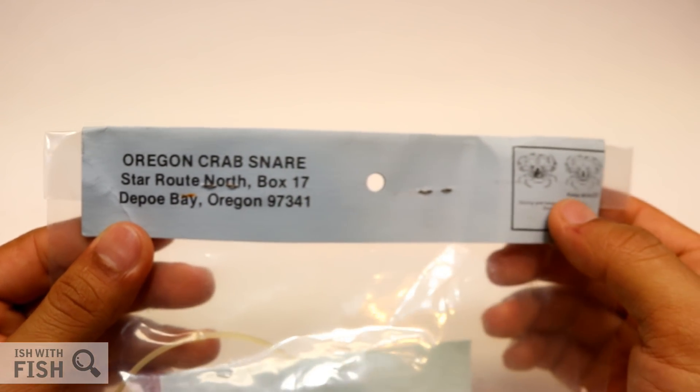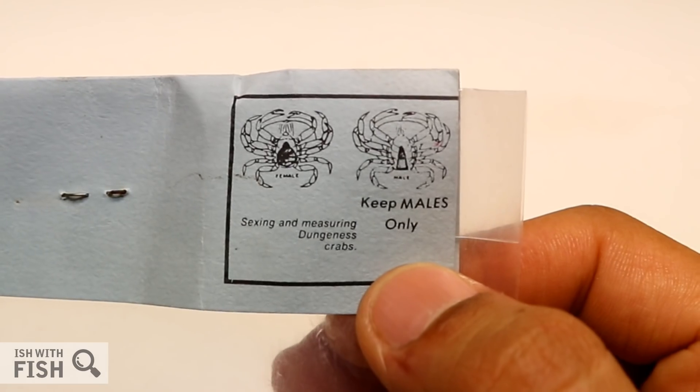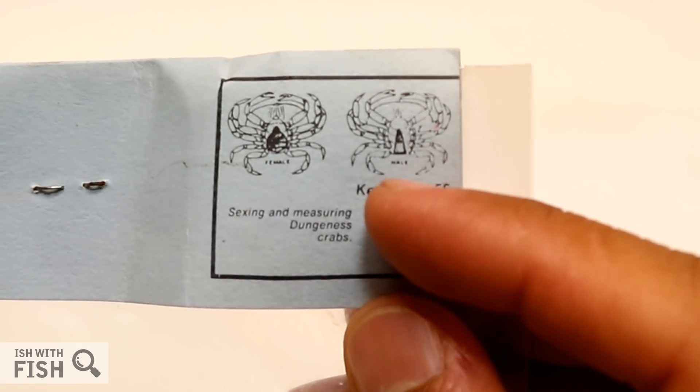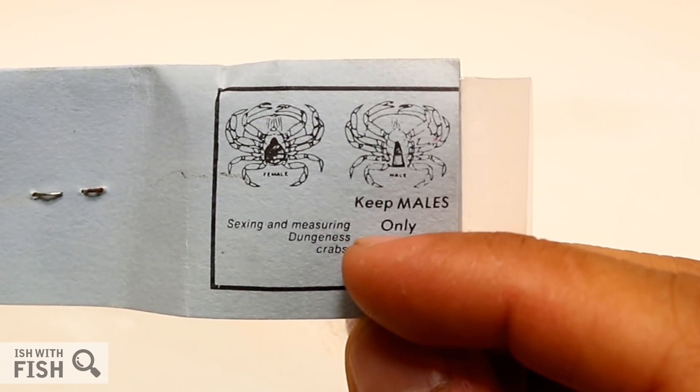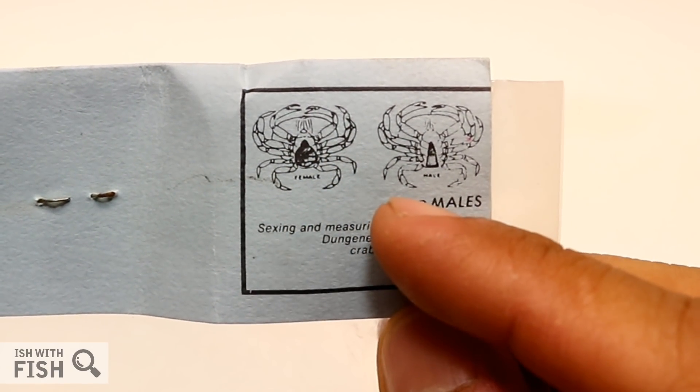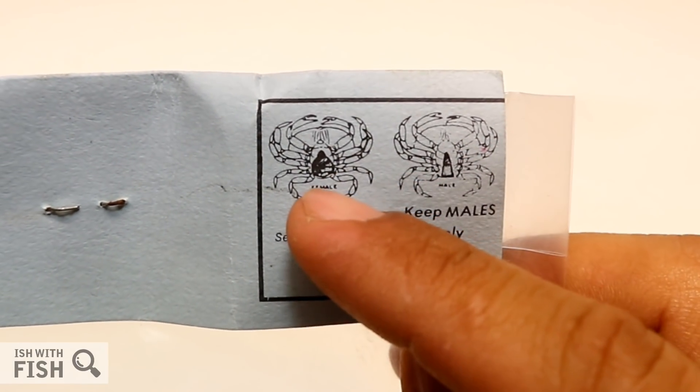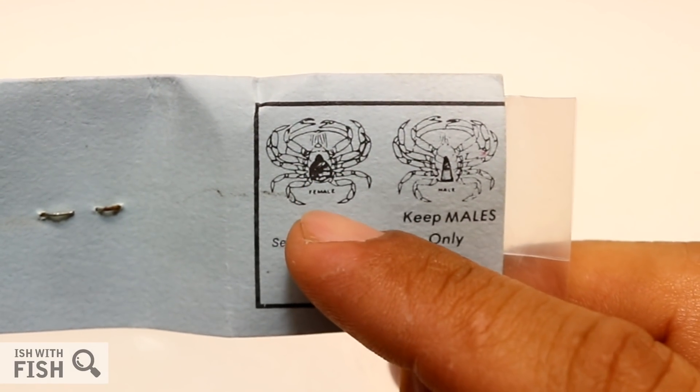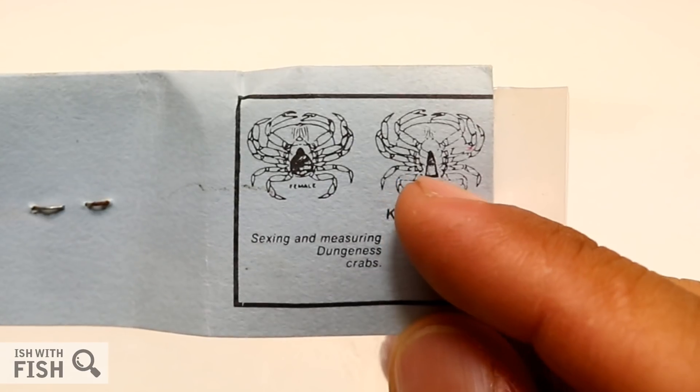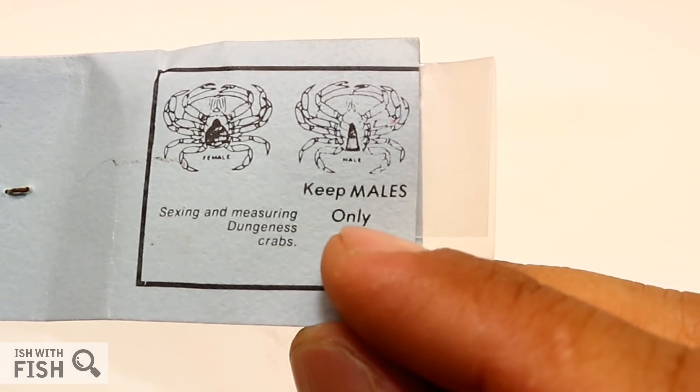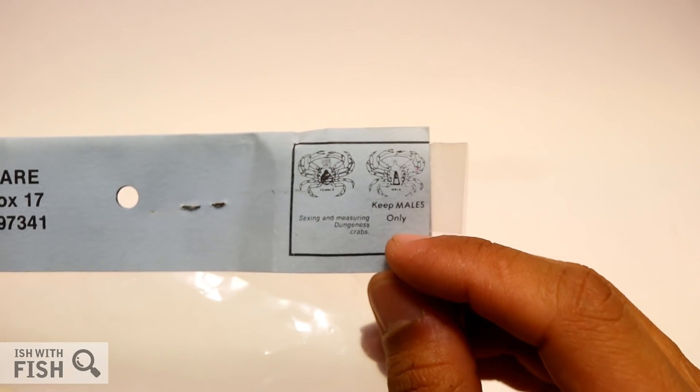In California where I'm based, you're allowed to keep both male and female crabs, but in the Pacific Northwest you're only allowed to keep males. Here's a simple diagram that shows the sex difference: the apron is really wide - that's how you know it's a female - and the apron on the male is long and skinny. The copy here says you can keep males only, so that's only true for the Pacific Northwest, specifically Oregon and Washington, but in California you can keep both.